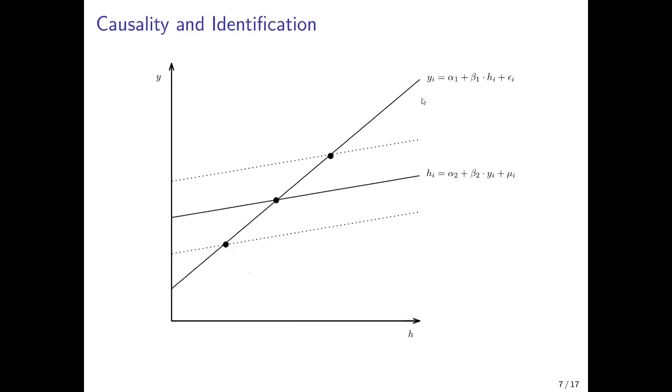But then also the causal relationship of health on income may shift, for example, due to measurement errors in the epsilon or due to omitted variables such that we get this relationship here with three other intersections now between this dotted line and the other lines we have here. Or we get this curve here with another three intersections.